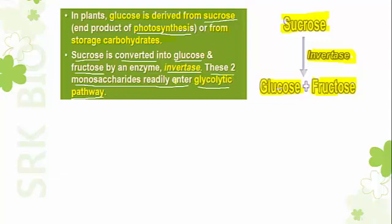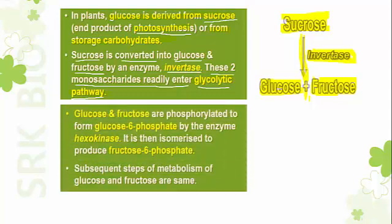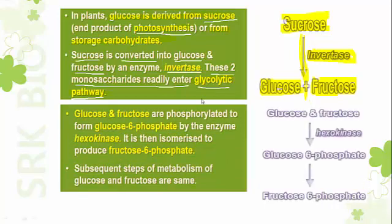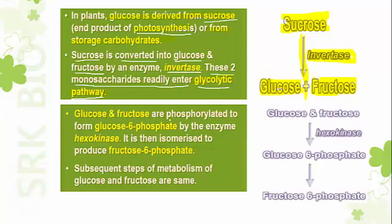These monosaccharide molecules — glucose and fructose — are ready to enter into the glycolytic pathway and undergo glycolysis. Sucrose is converted into glucose and fructose with the help of the enzyme invertase. Then glucose and fructose are phosphorylated — that is, an inorganic phosphate is added to them.